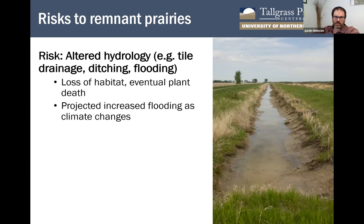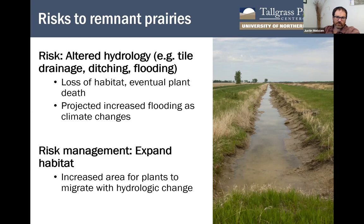Another risk to remnant prairies is altered hydrology — tile drainage, ditching, and flooding. If the remnant experiences significantly wetter or drier conditions than it evolved in over long periods of time, that leads to changes in habitat conditions that no longer support the plants there, and ultimately those plant populations die out. As climate changes, we also expect changes in hydrology — flooding will become more intense and frequent, putting stress on many remnants in floodplains. This is a tough risk to manage; the only real solution is often to try to expand habitat around a remnant to allow plant populations to move into drier or wetter areas as conditions change.